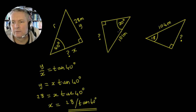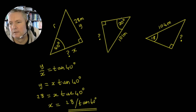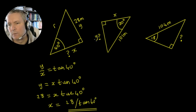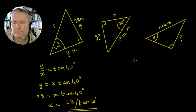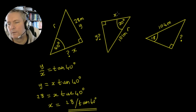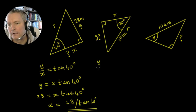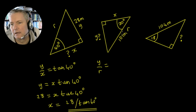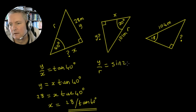Now we can see here we've got this angle here. The distance along here is going to be our value of x, the distance along here is going to be a value of y, and the distance along here is going to be a value of r. We're looking to find this length here, and we've got a y and an r. So we know that y divided by r is going to be the sin of this angle, 20 degrees.